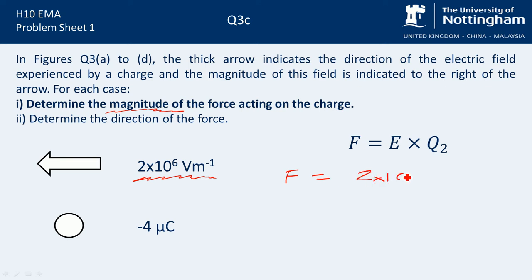This is 2 times 10 to the power of 6 multiplied by minus 4 microcoulombs. But because we're interested in the magnitude, we don't worry about the negative sign. So 4 times 10 to the minus 6.